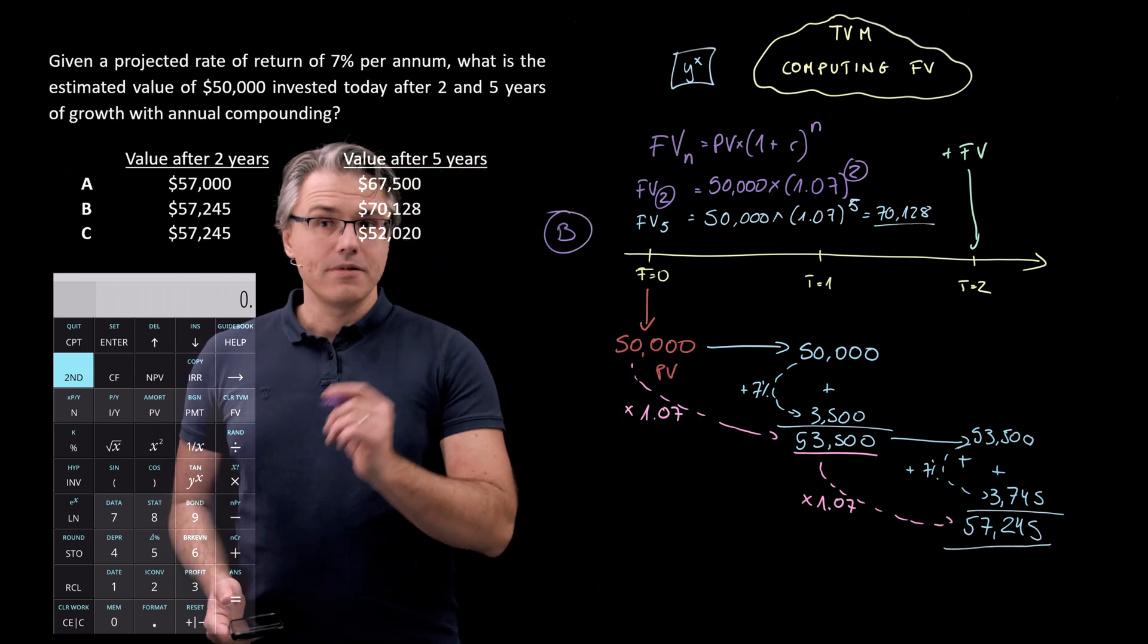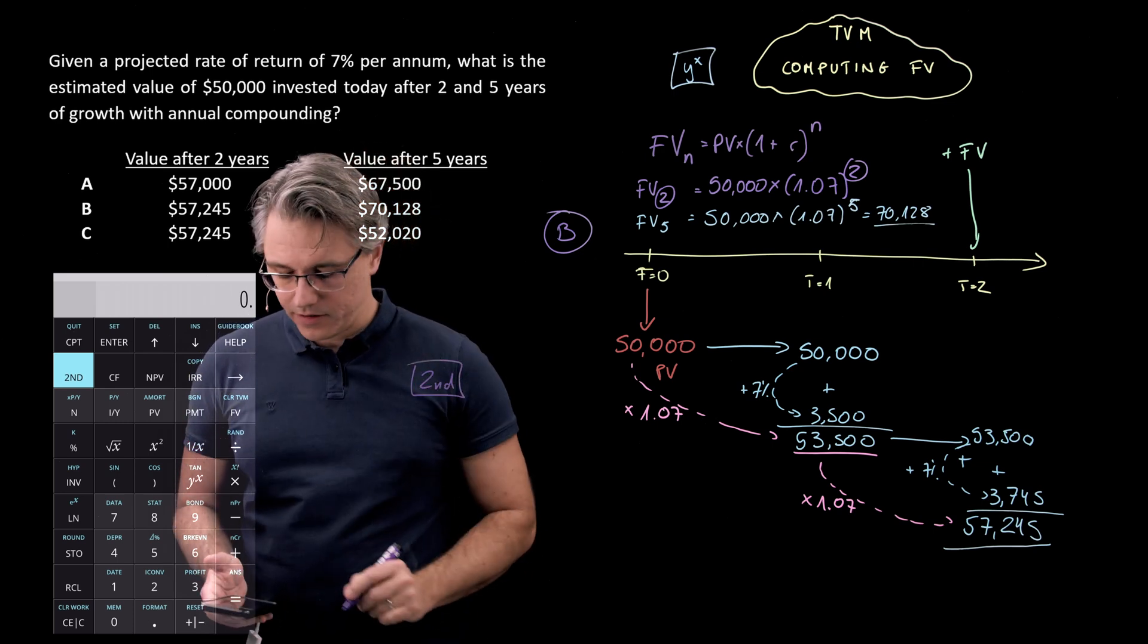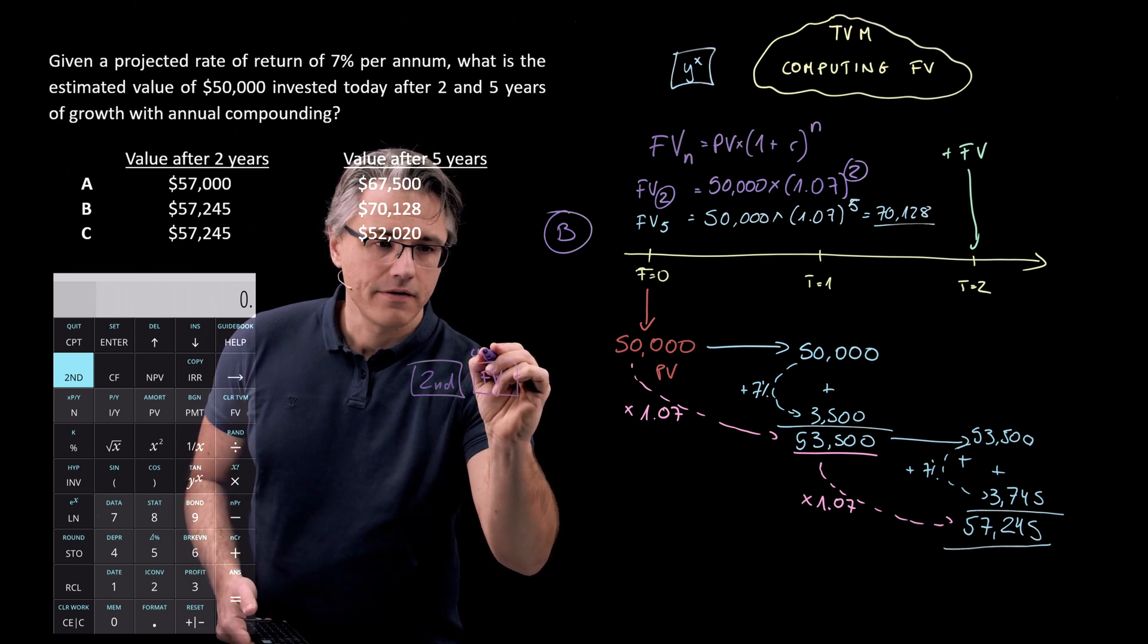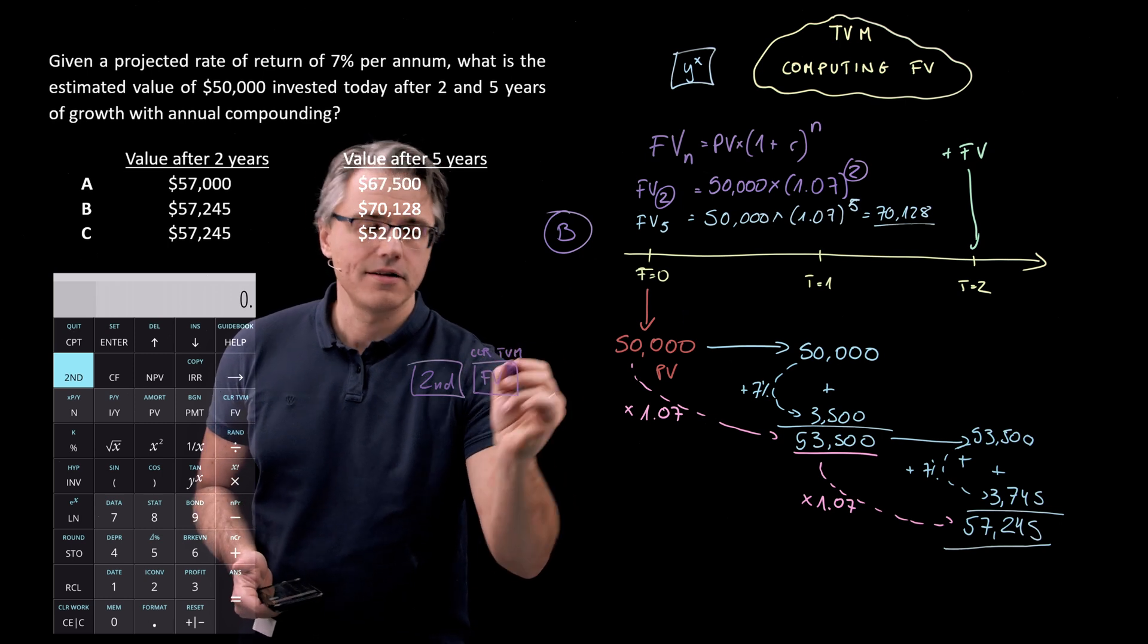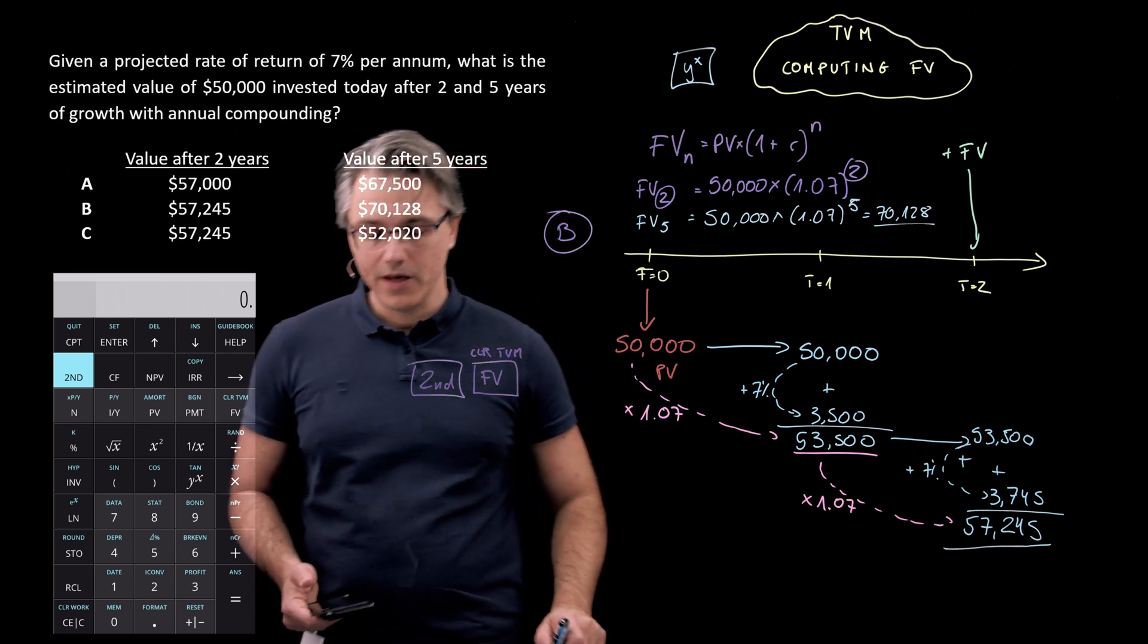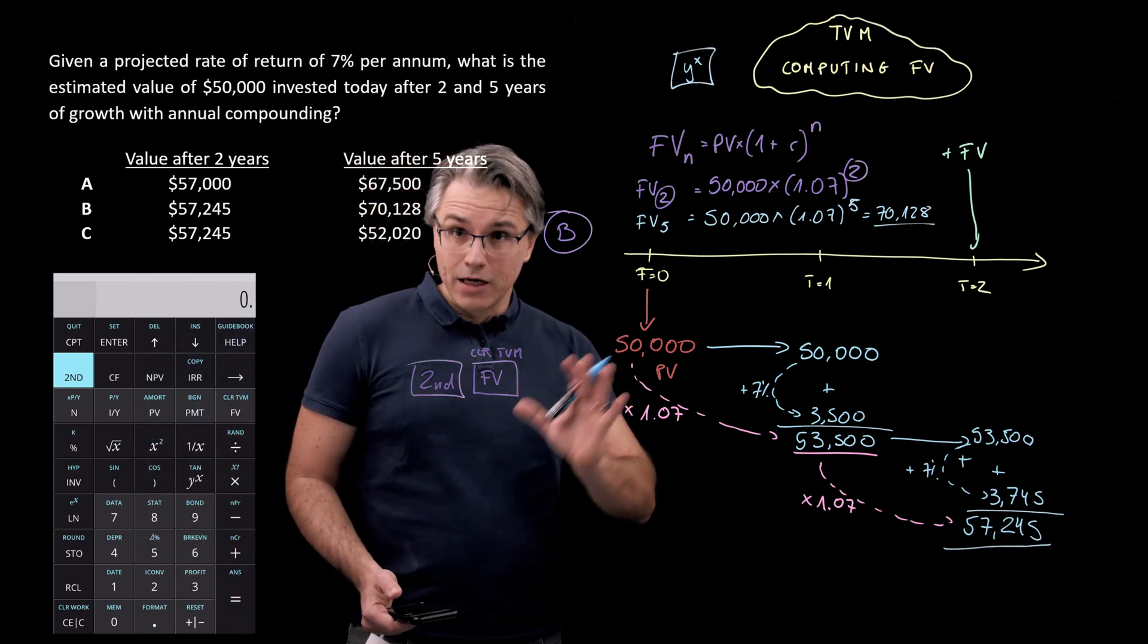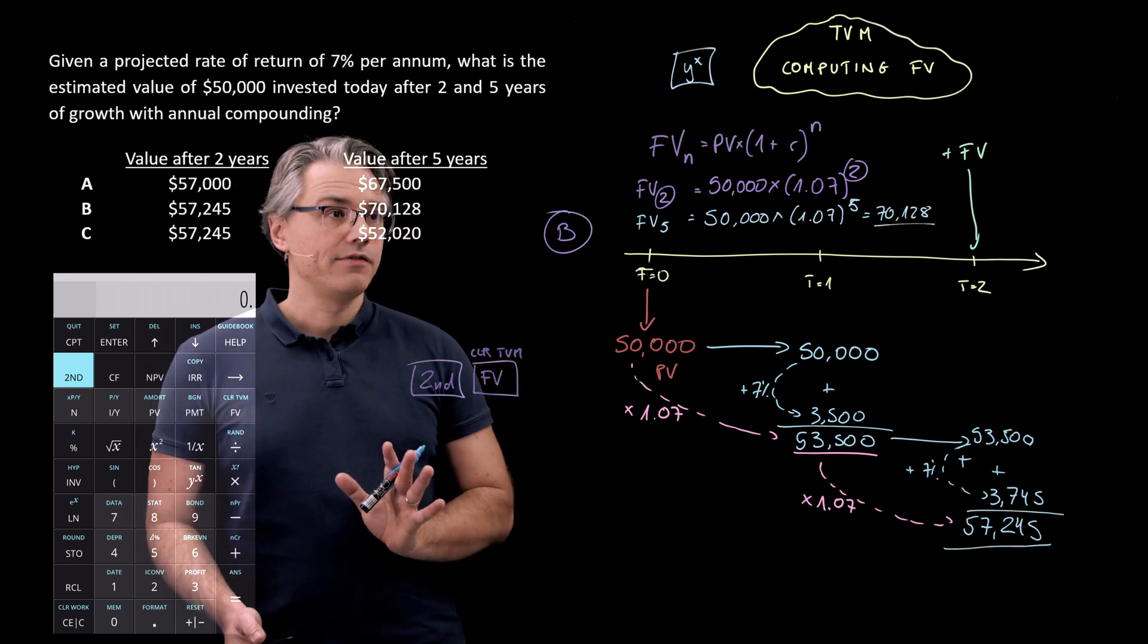And that means pressing the following sequence of buttons. Second, the second key, followed by the FV key, which has clear TVM on top of it. So that is its secondary function. That's why we pressed second, followed by FV to access this section or this function. And now you're in it, now you've got the worksheet cleared. You're supposed to provide the relevant inputs.